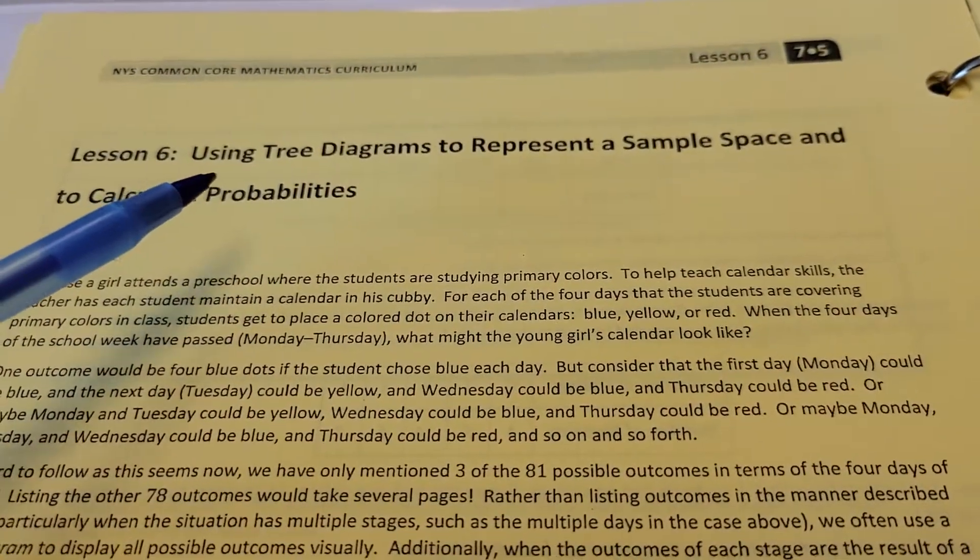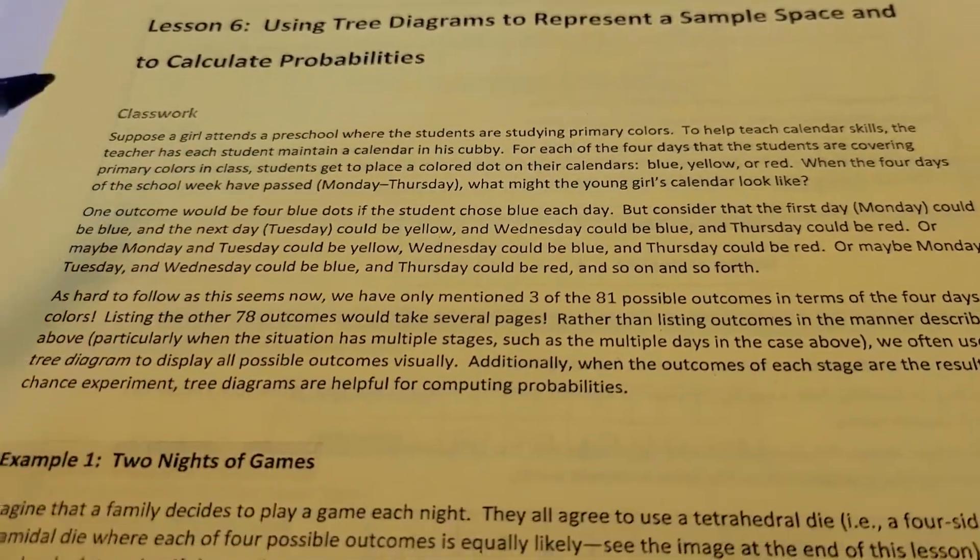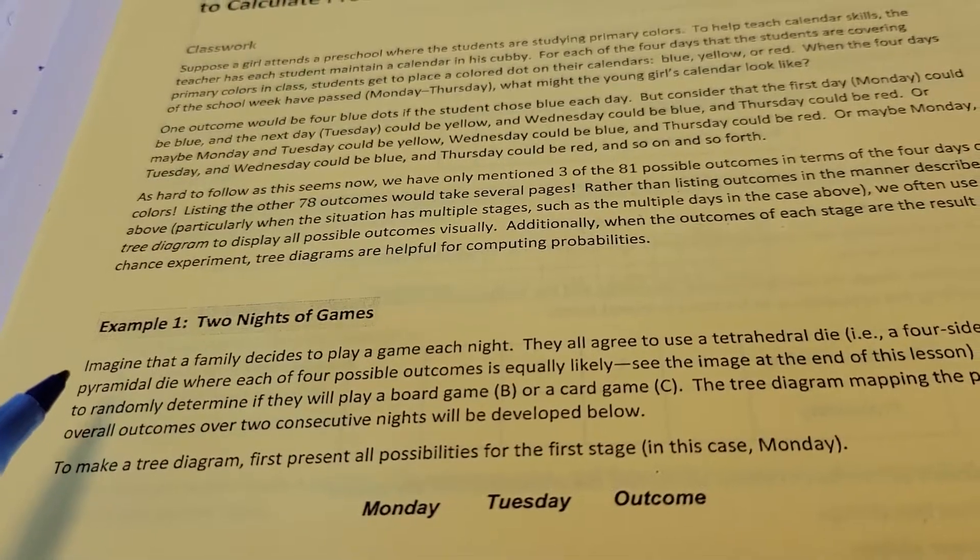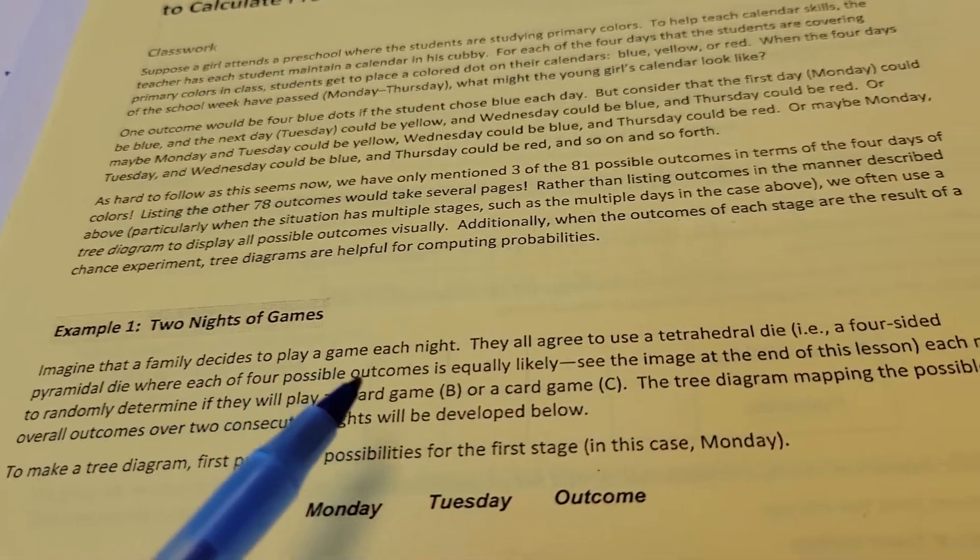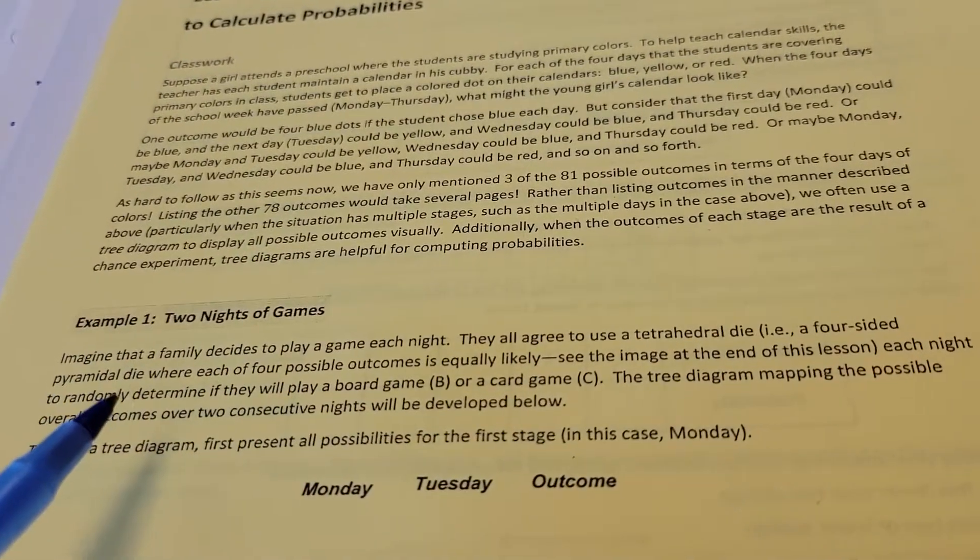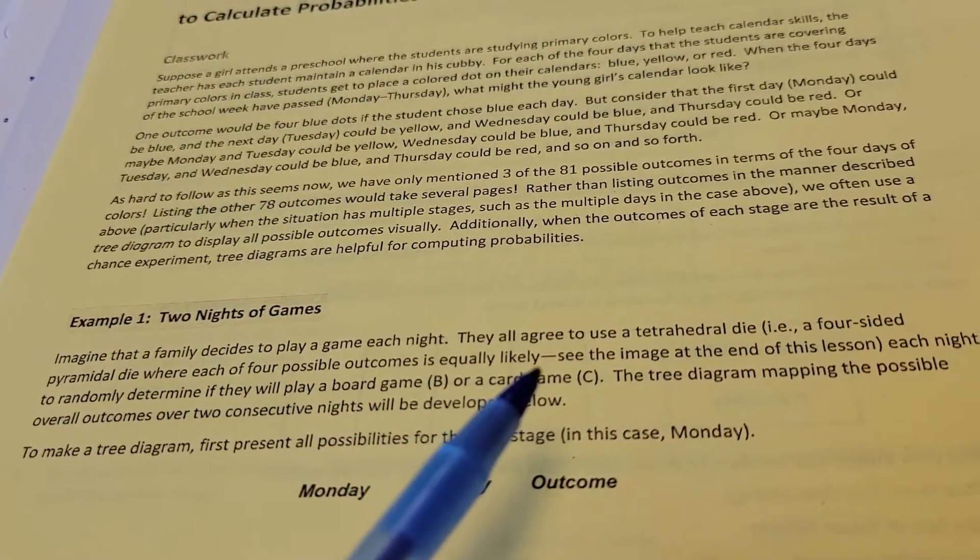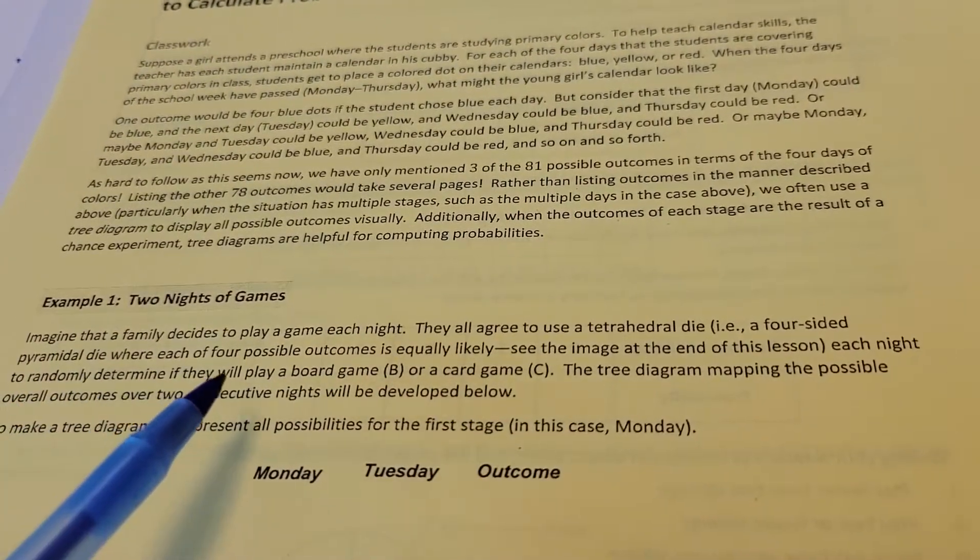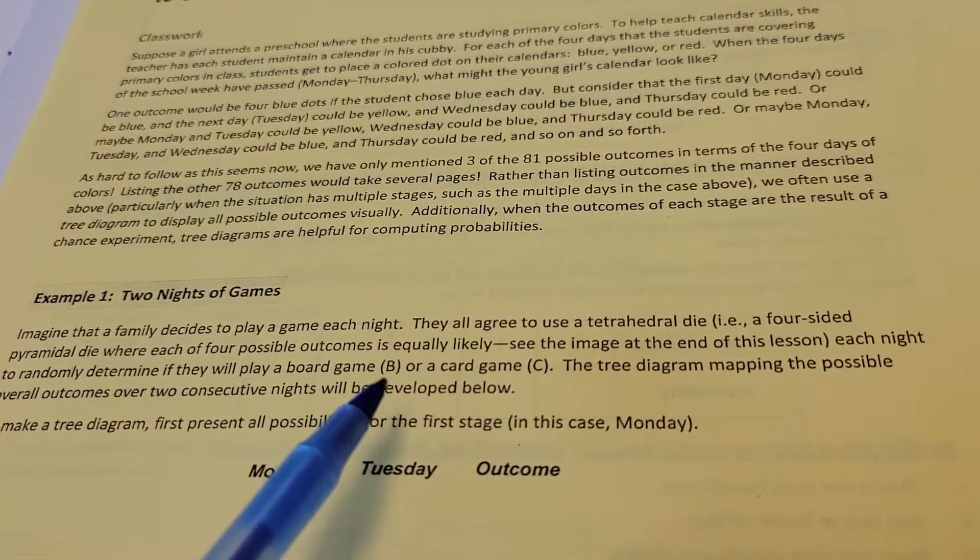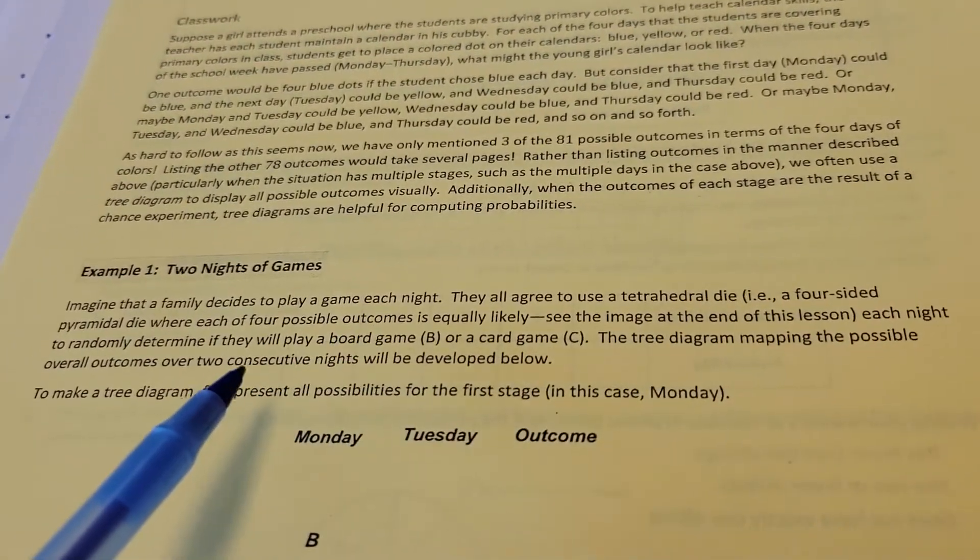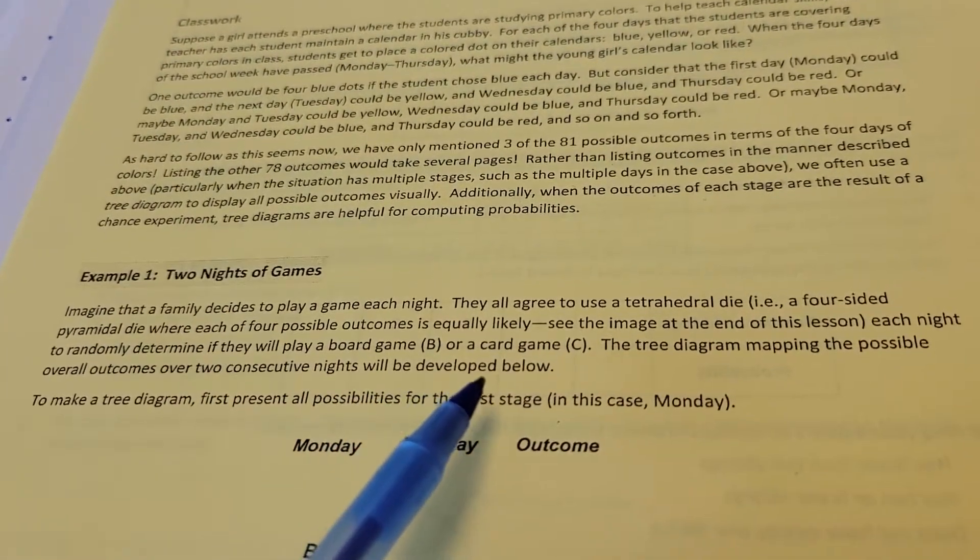We're on Lesson 6: Using Tree Diagrams to Represent a Sample Space and Calculate Probabilities. Here's our first job in Example 1. Imagine that a family decides to play a game each night. They all agree to use a tetrahedral die, a four-sided pyramidal die, where each of the four outcomes are equally likely.